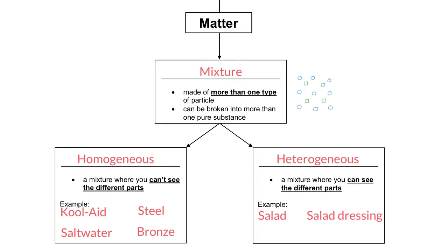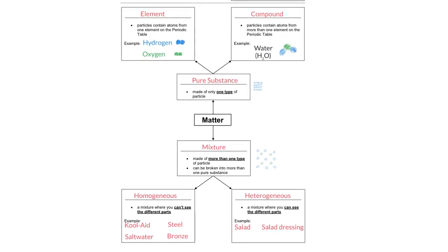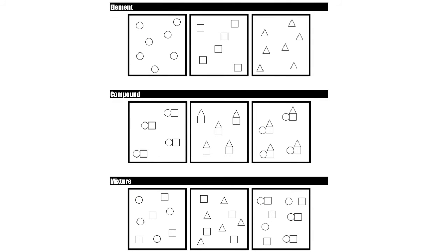I hope that was helpful. Before we get into the nitty-gritty details of chemistry, we need to understand how matter can be classified. Here's the big view: matter can either be a pure substance or a mixture. Pure substances are either elements or compounds. Mixtures can be either homogeneous or heterogeneous. Now I want to give a clearer idea at the particle level of what's going on in an element, a compound, and a mixture.